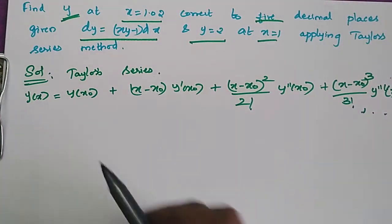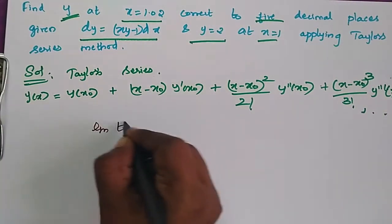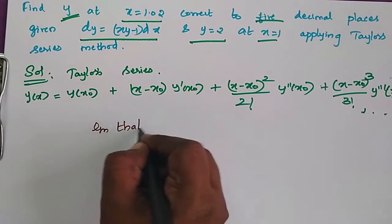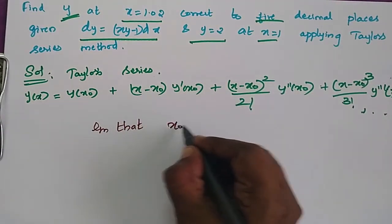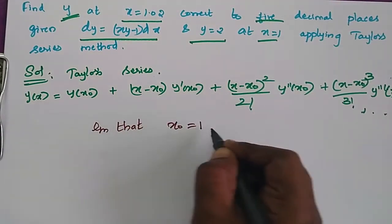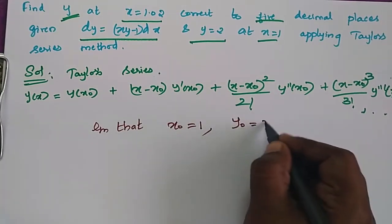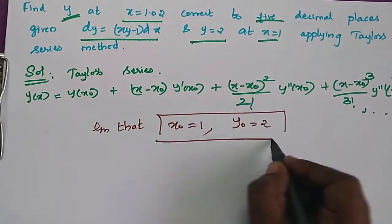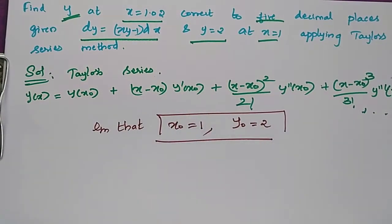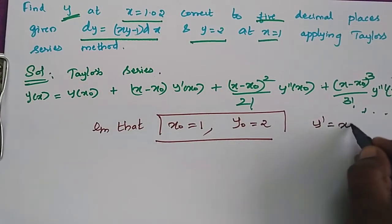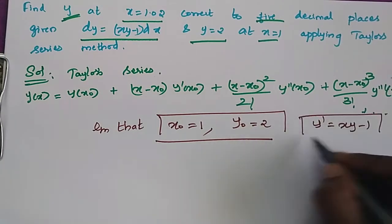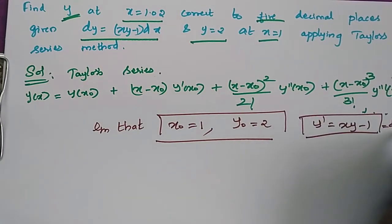Given that x₀ is equal to 1, y₀ is equal to 2. The differential equation is y' equals xy minus 1, where y' is dy/dx.